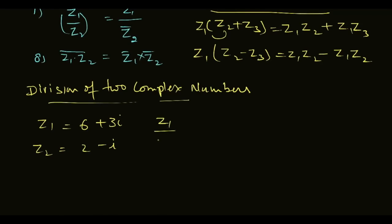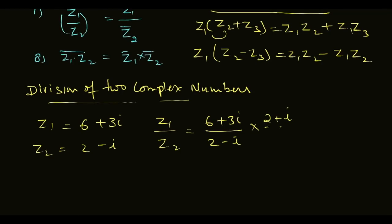Now let's look at an example of z1 upon z2: we have 6 plus 3 iota divided by 2 minus iota. To solve this we use rationalization by multiplying and dividing by the conjugate of the denominator, which is 2 plus iota. So we multiply both numerator and denominator by 2 plus iota, which is z2 conjugate, and then solve the division.